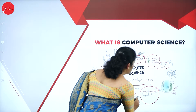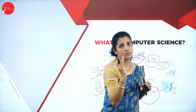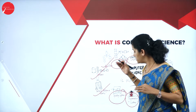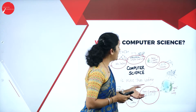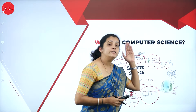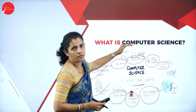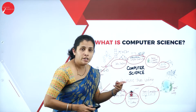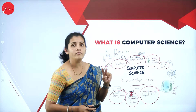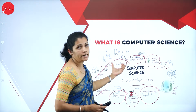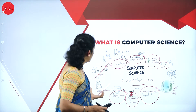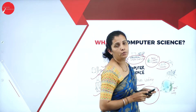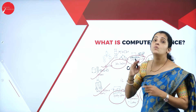Computer science is a study of all fields related to the computer: algorithms, databases, networks, operating systems, programming languages, and computer architecture. In particular, we are going to study data structures, algorithms, databases, operating systems, different programming languages, networks, and computer architecture. Computer science is a vast area that provides a large study area with different fields and subjects.